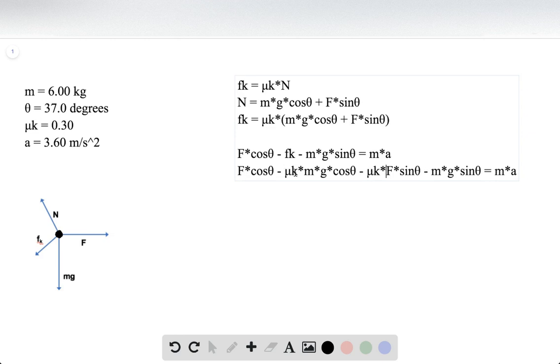Now we can group the like terms together. We want to get F on its own, so let's move all the other terms to the right side. We now have two terms with F, so we can factor it out: F times cosine theta minus mu K sine theta.